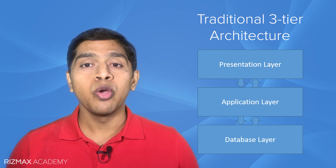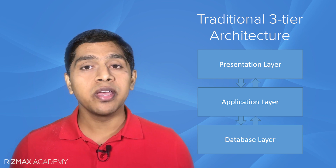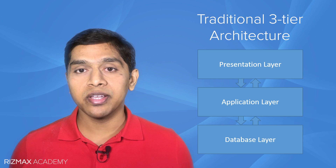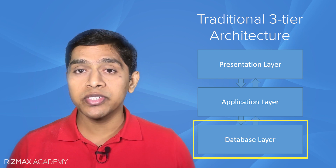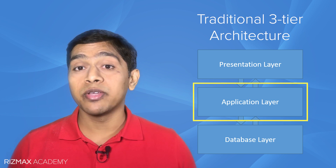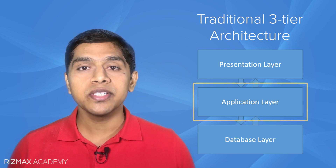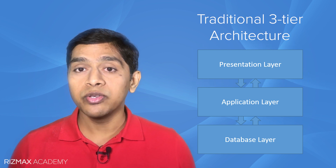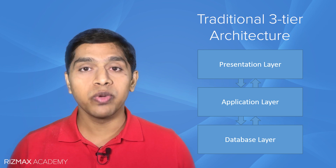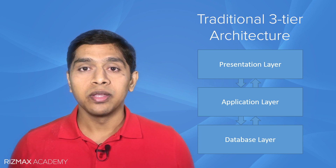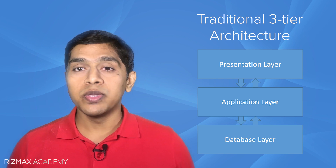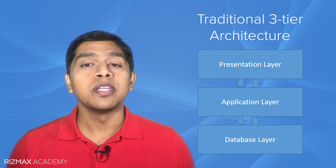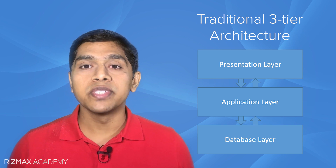Server-based computing typically follows a three-tier architecture. In three-tier architecture, we have a database layer, an application layer, and a presentation layer. The database layer is where your database server is. The application layer is where your application code runs. And the presentation layer is where the UI is provided to the end user. End users can interact with your application or website in a variety of ways — using a web browser, a mobile smartphone, or even an IoT device, depending on how you have designed your application.